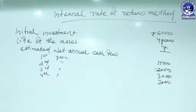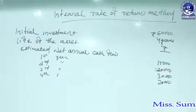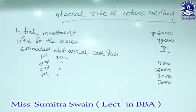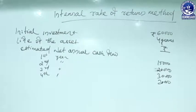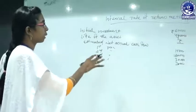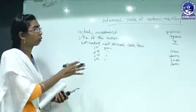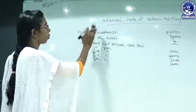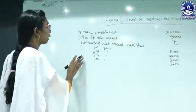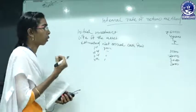The next method is the Internal Rate of Return (IRR). This method is also known as the discounted rate of return, the trial-and-error method, or the yield method — it is a modern technique of capital budgeting. IRR is a measure of an investment's expected future rate of return. Because the rate of return is calculated internally within the organization, it is called the internal rate of return.